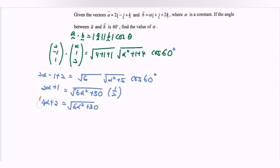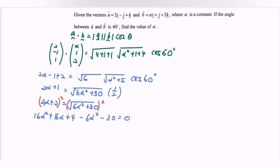Square both sides to eliminate the square root. We get 16 alpha² + 16 alpha + 4 minus 6 alpha² minus 30 equals 0. Rewriting: 10 alpha² + 16 alpha minus 26 equals 0. Simplifying: 5 alpha² + 8 alpha minus 13 equals 0.